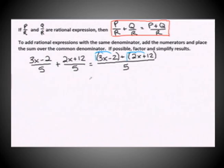So what we have now is 3x, negative 2, positive 2x, and positive 12 over 5.